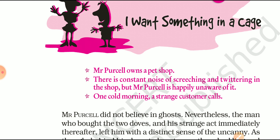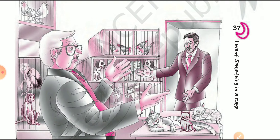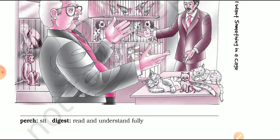A description of Mr. Purcell's daily routine is also given. He comes to his shop where there are different kinds of animals in cages making different sounds. While those noises might irritate anyone else, for Mr. Purcell they seemed very meaningless. He used to stand behind the counter and read his newspaper in detail — reading every advertisement and every detail mentioned in that newspaper.